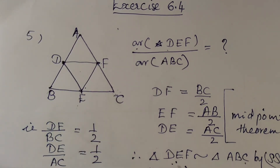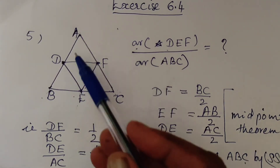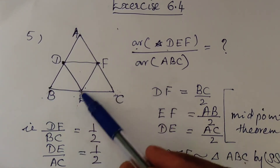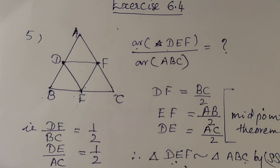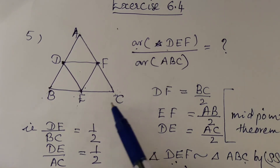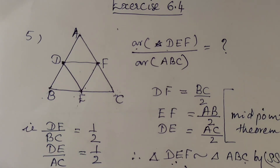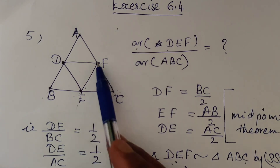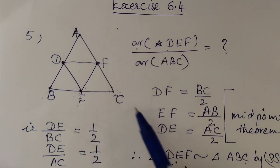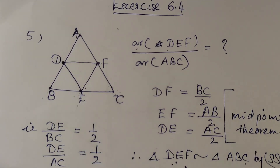By the midpoint theorem, DF is parallel to BC. Similarly, EF is parallel to AB, which means DB is parallel to EF. So BEFD has opposite sides equal and parallel, making it a parallelogram. Similarly, ECFD is also a parallelogram. Therefore, angle C is equal, and we can also apply AA similarity to confirm the result. The answer is 1 is to 4.